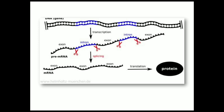In this figure, you can see that the black color represents the exons and the purple color represents the introns. After transcription, the mRNA copy, which is single-stranded, possesses both exons and introns.